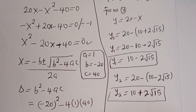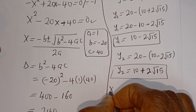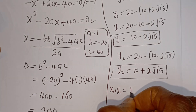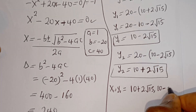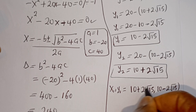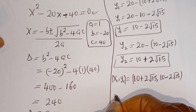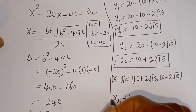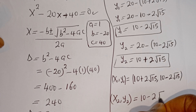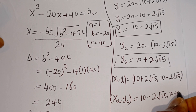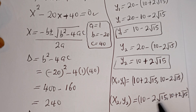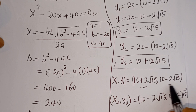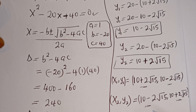Therefore, our final answers are: x₁, y₁ is equal to 10 plus 2 root 15, and x₂, y₂ is equal to 10 minus 2 root 15. You can see that x₁ here is equal to y₂ here, and y₁ here is equal to x₂ here. I hope you enjoyed the video. Thank you for watching.